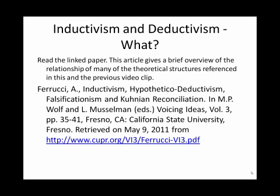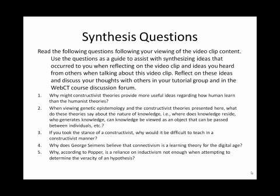Finally, the synthesis questions for this particular clip are as follows. Number one: why might constructivist theories provide more useful ideas regarding how humans learn than the humanist theories? Number two: when viewing genetic epistemology and the constructivist theories presented here, what do these theories say about the nature of knowledge? In other words, where does knowledge reside? Who generates knowledge? Can knowledge be viewed as an object that can be passed between individuals? Number three: if you took the stance of a constructivist, why would it be difficult to teach in a constructivist manner? Number four: why does George Siemens believe that connectivism is a learning theory for the digital age? And number five: why, according to Popper, is a reliance on inductivism not enough when attempting to determine the veracity of a hypothesis?